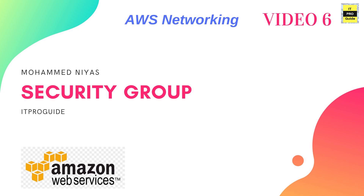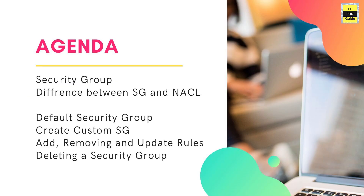Hello and welcome everyone to ITProGuide and the sixth video of AWS Networking. In this video we are going to talk about security groups for your instances. Our agenda is to cover security groups, the differences between security groups and network ACL, then we're going to do some demos on how to create a security group, how to modify the default security group, how to add rules, and how to delete a security group.